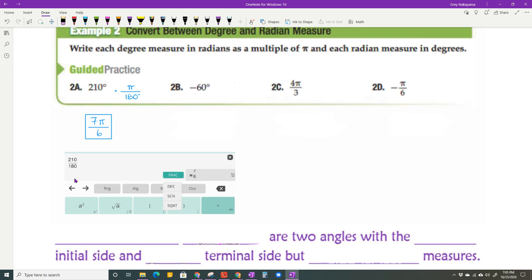Okay, negative 60 degrees. I'm going to multiply that again by pi over 180 because I want radians. I want to get rid of degrees. Now the thing that you got to be aware of here is this negative has no effect and it's just going to be carried down with your answer. So 60 over 180 is 1 over 3. So I'm going to have negative pi over 3.